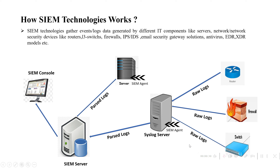From here, raw logs will be pushed to a centralized syslog server where our SIEM agent will be residing. This will normalize the logs and push them to the SIEM main server, and finally they will be displayed on the SIEM console. The same applies for servers as well — we have AD server, file server — where SIEM agents will be installed, normalizing every log and pushing it to the SIEM server.